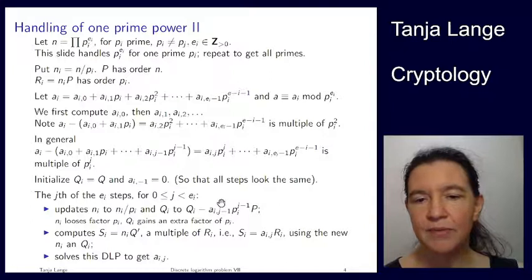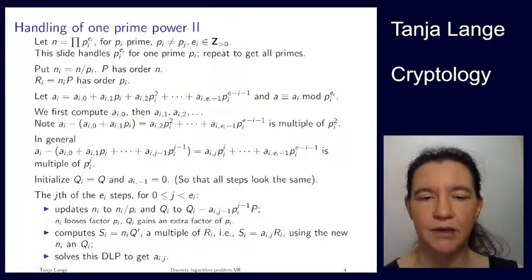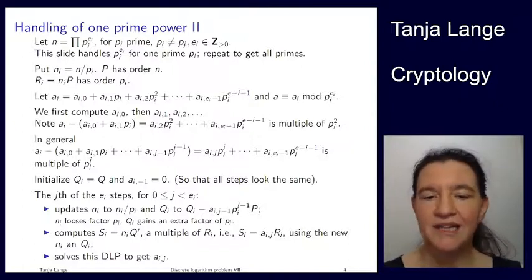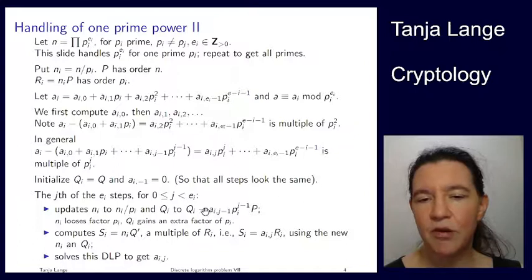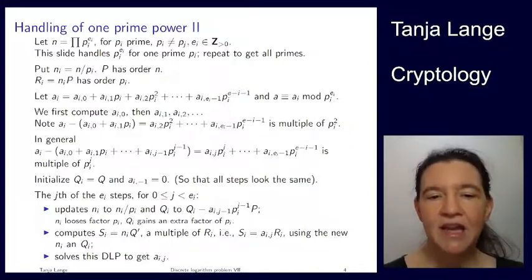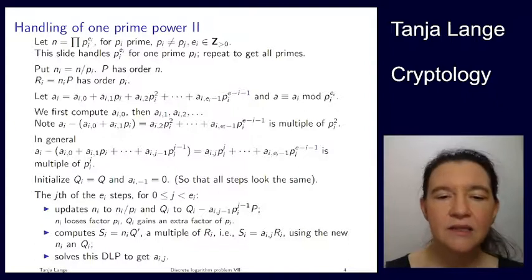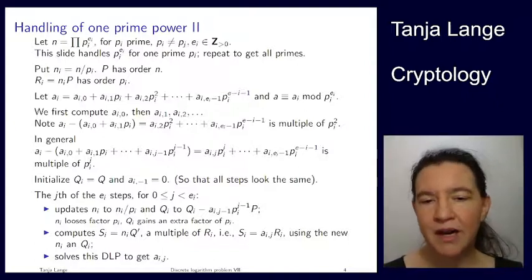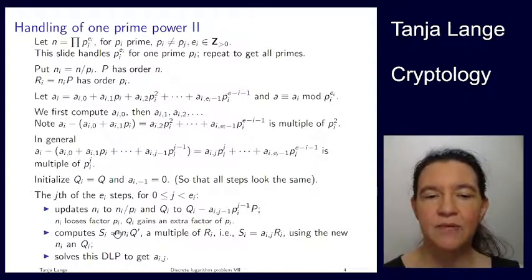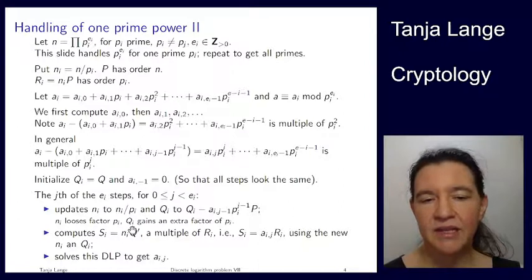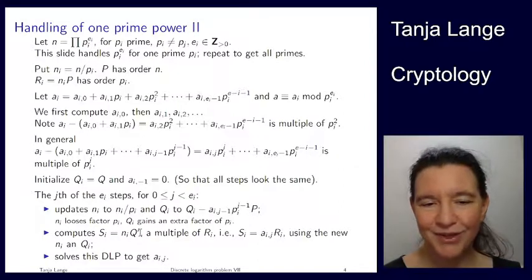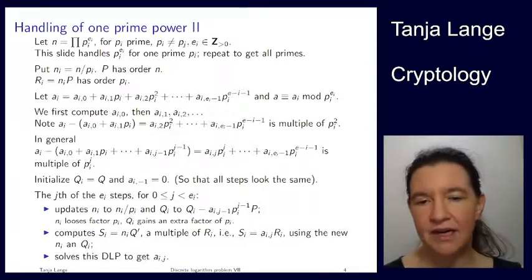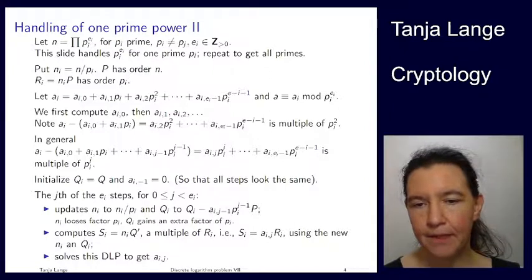Very, very important, do not forget the multiple to the power of pi here. So when you're in the jth step, you do update with the jth power here. And that means, well, at each step, because you're dividing by pi here, and this is divisible by one extra power of pi, you again have that your qi is in this group generated by ri. So si, so the si being ni times this qi, this should be a qi, is the multiple of this ri.